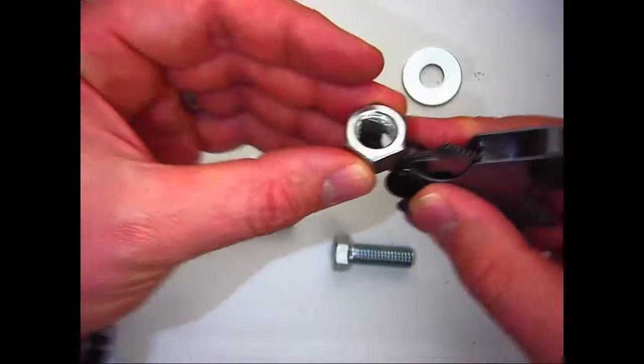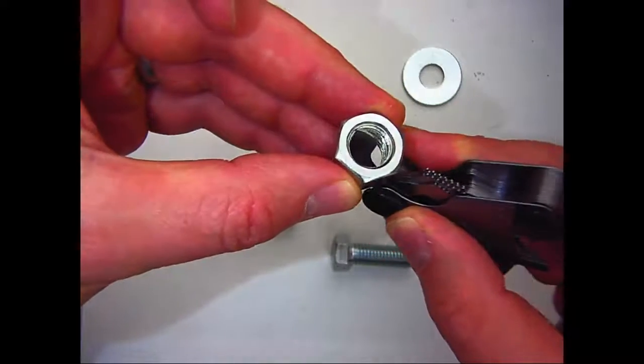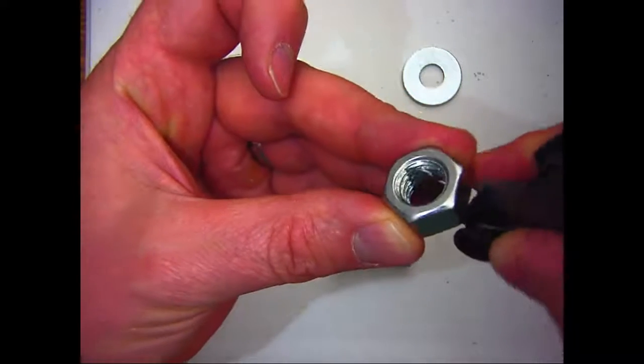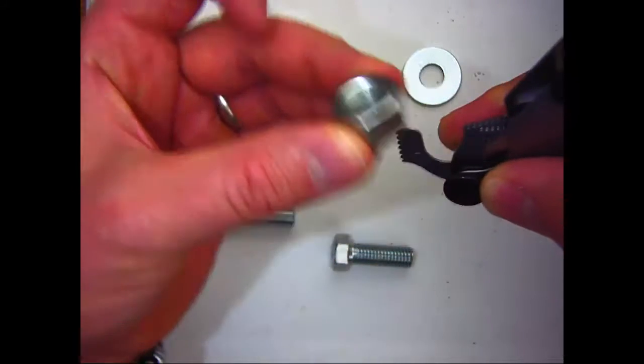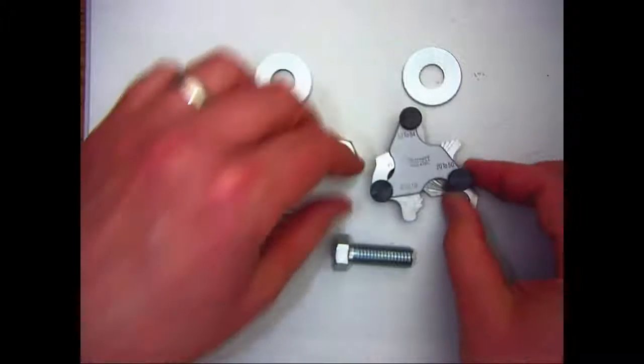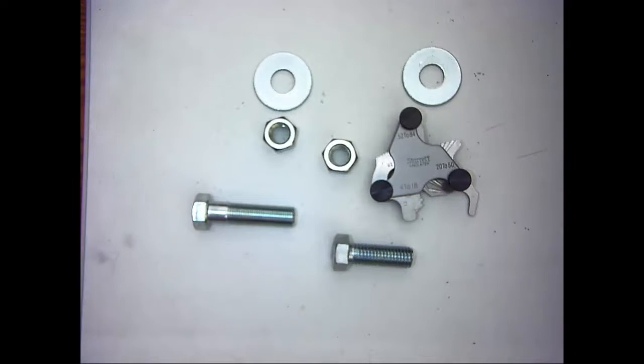Problem is, this is difficult to show with my video camera setup. So, when we specify bolts, not only do we have to state the bolt diameter, we must also specify the number of threads per inch. As we have shown, fine and coarse thread nuts are not interchangeable.